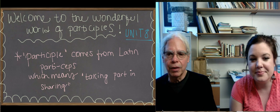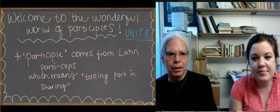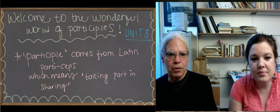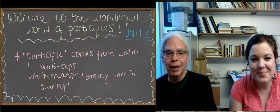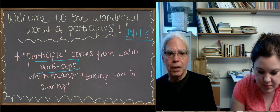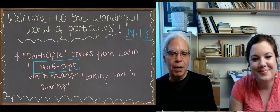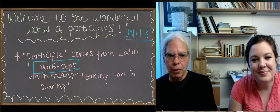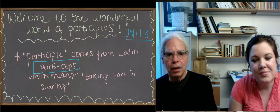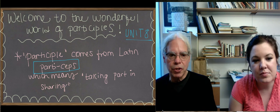All right, so first of all, let's talk about English. What is a participle? The English word participle comes from a Latin word, an adjective, particeps. The parti part is not about parties, but part. And ceps comes from the Latin verb capio, that means to take. So it means an adjective, meaning taking part in or sharing.